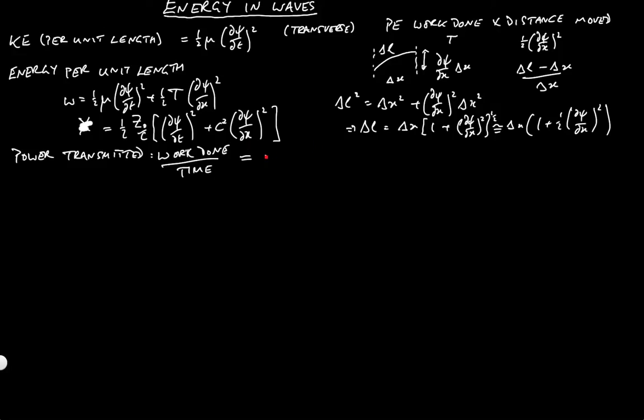Now let's think about that. The work done is minus t dpsi by dx. That's the vertical component of the tension, given the current position of the string. And that's going to be multiplied by delta psi, because that's the distance moved vertically.